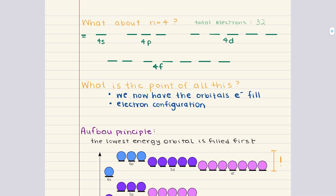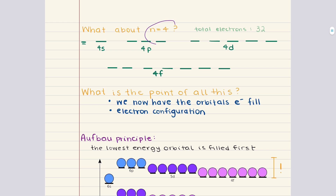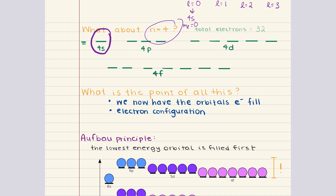Finally, in the fourth shell where n is equal to four, we add yet another subshell — the f subshell — which will hold seven orbitals that can hold a total of 14 electrons. Let's work through this. When n is equal to four, l can be equal to zero, one, two, or three. When l is equal to zero, we have our 4s subshell, and ml can only be zero, which means there's only one orbital in our 4s subshell that can hold two electrons.